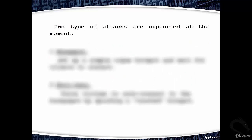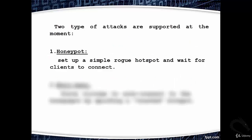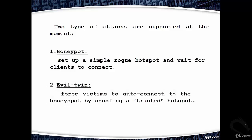Two types of attacks are supported at the moment. First, Honeypot — set up a simple rogue hotspot and wait for clients to connect. Second, Evil Twin — force the victim to auto-connect to the honeypot by spoofing a trusted hotspot.